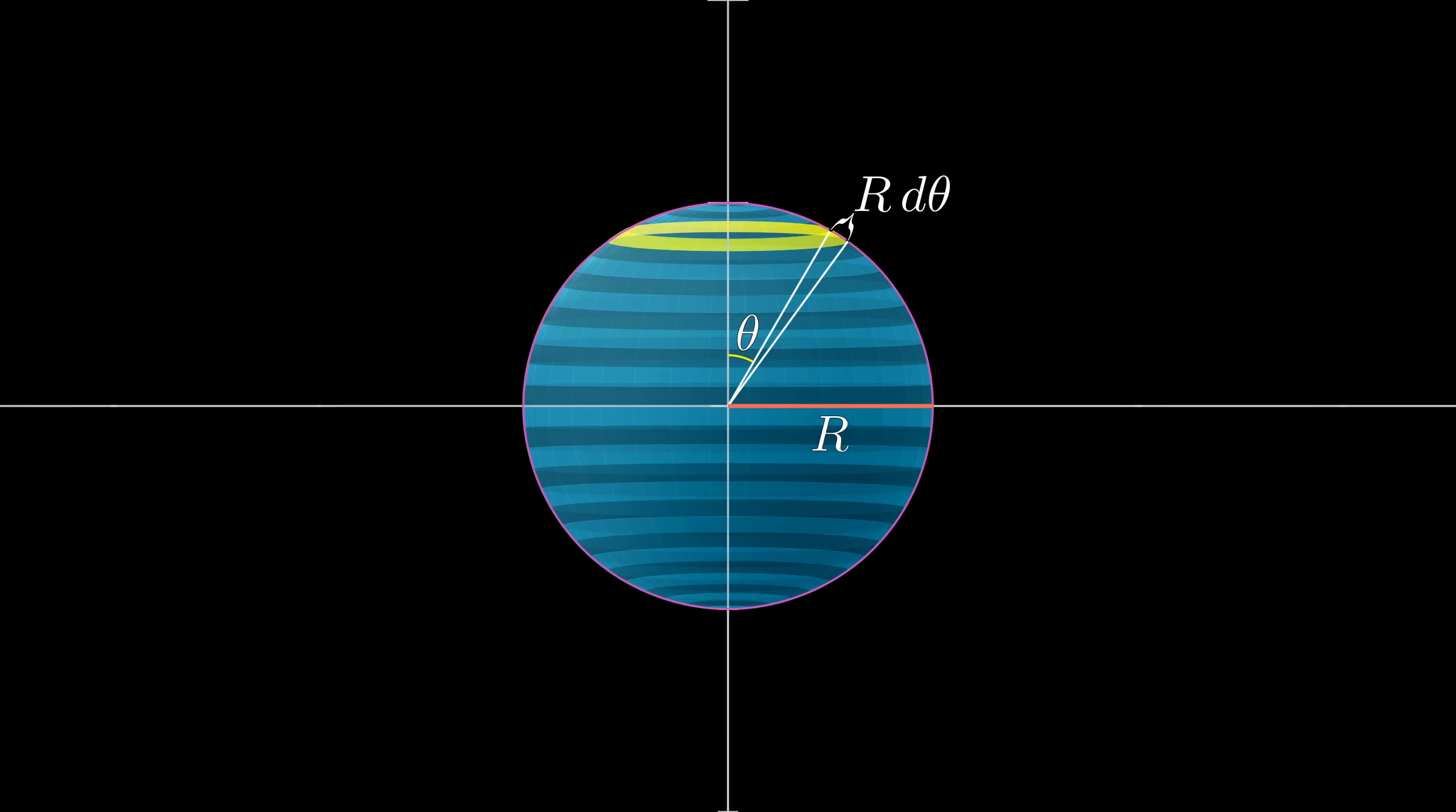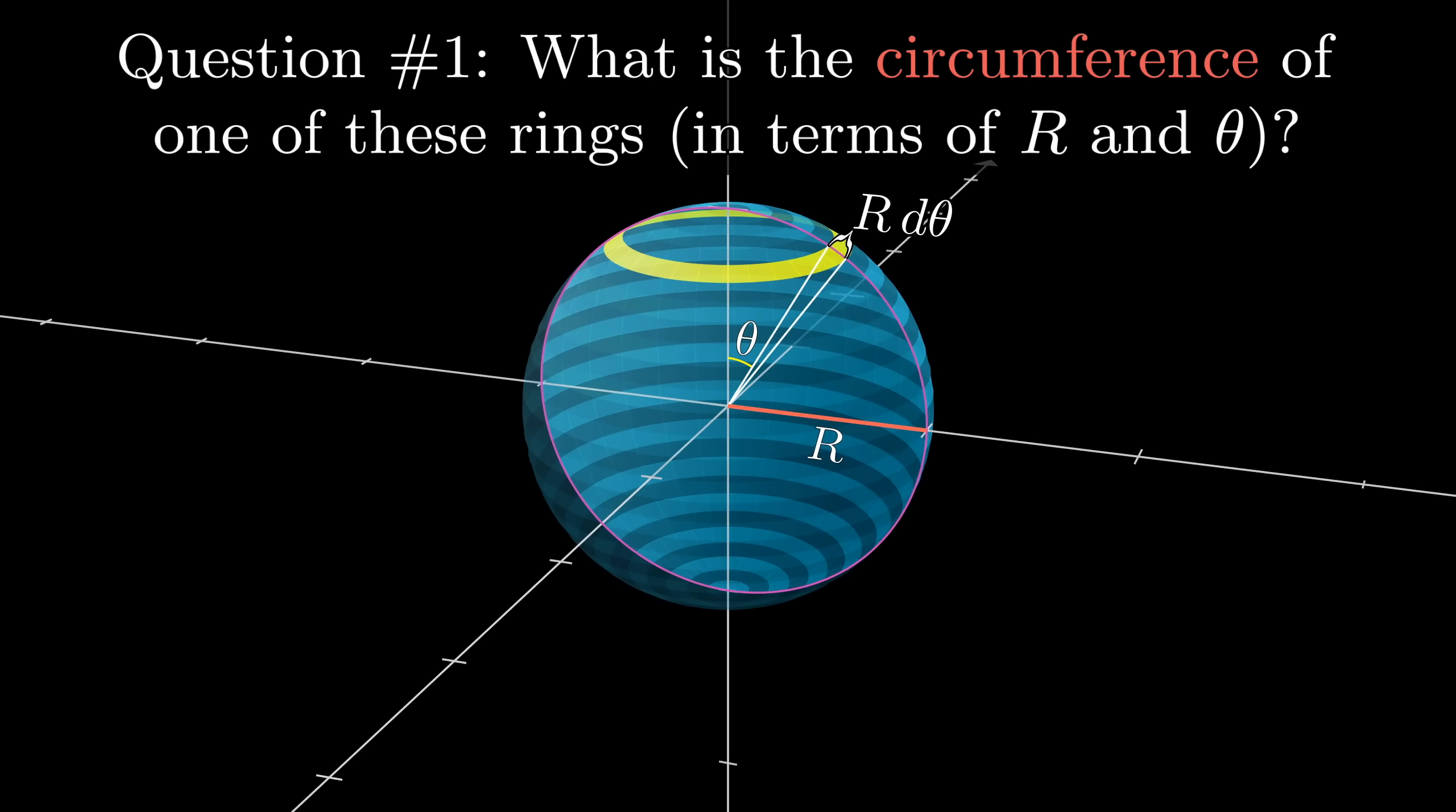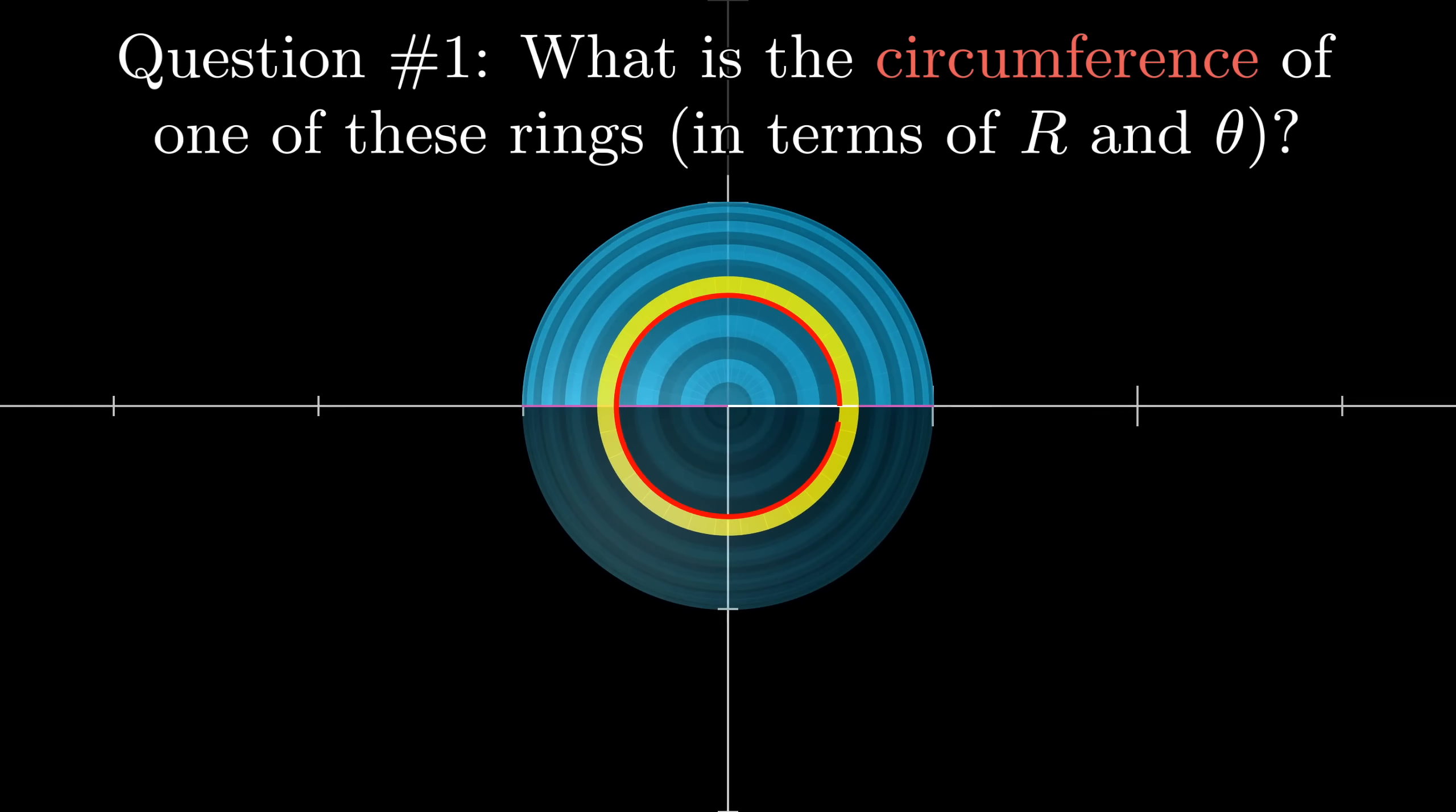Alright, structured exercise time. We'll ease in with a warm-up. Question number one, what is the circumference of this ring, say, at the inner edge, in terms of r and theta?